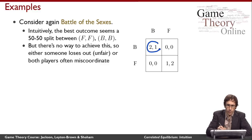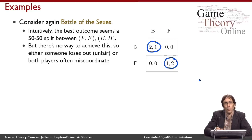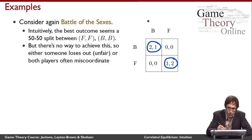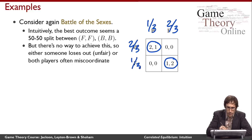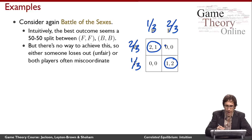Remember there's a Nash equilibrium where both players play B, and a Nash equilibrium where both players play F. There's also another Nash equilibrium where both players randomize according to certain probabilities, which means all four outcomes can happen — including the miscoordination ones.